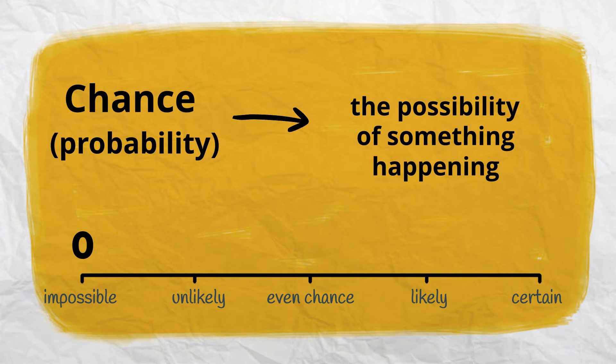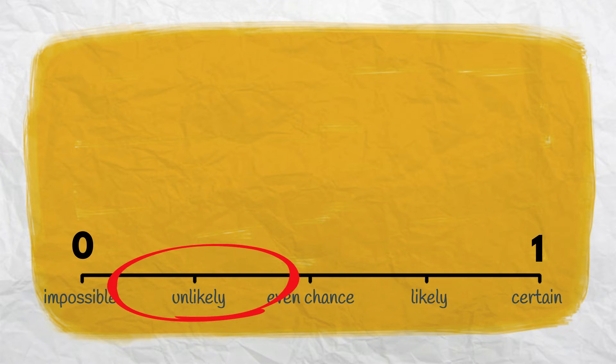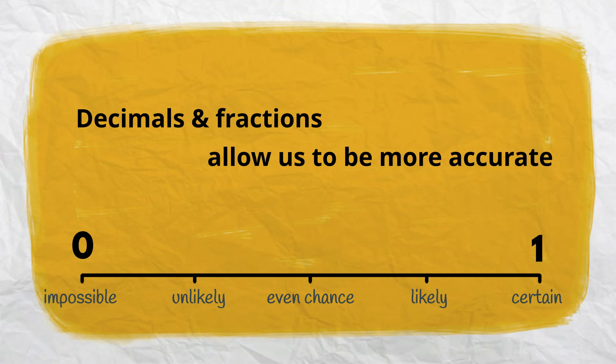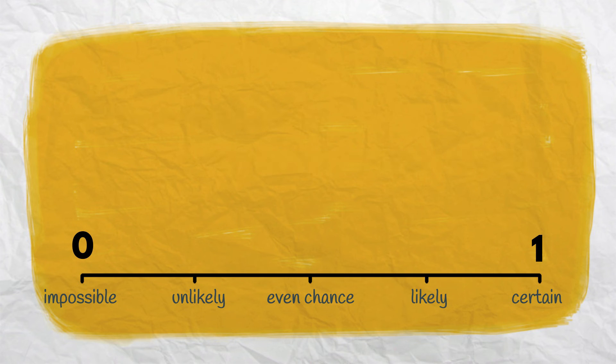Zero is used to describe events that are impossible, and one is used for events that are certain. For events that sit somewhere in between, fractions or decimals are used. This is useful because not all unlikely events are equally unlikely. Some will be more unlikely than others, and some likely events will be more likely than others. Decimals and fractions allow us to be more accurate when describing chance.